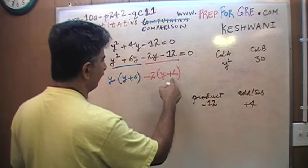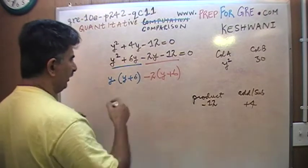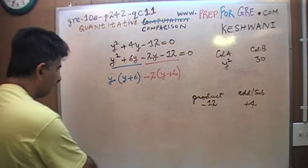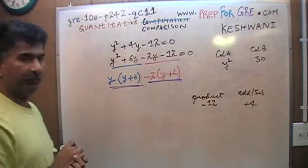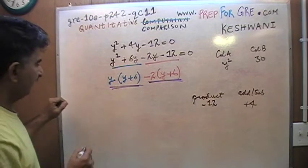y plus 6, because plus 6 times negative 2 is going to give me negative 12. And now I want you to look at these two terms. What do you find common? I find y plus 6 common.